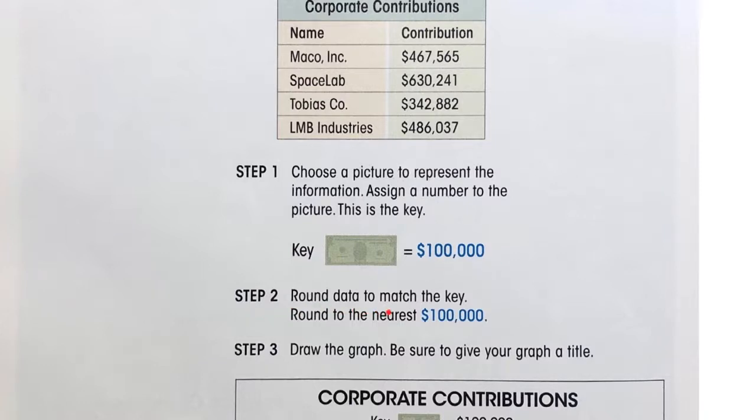Step two, round the data to match the key. The key is $100,000, so round to the nearest $100,000. Then step three, draw the graph. Be sure to give your graph a title.